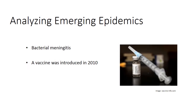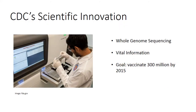Bacterial meningitis kills 1 in 10 patients in less than 48 hours. A vaccine was introduced in 2010 to prevent the most common strain of meningitis in Africa. CDC will use whole genome sequencing to assess epidemic potential of emerging meningitis strains.